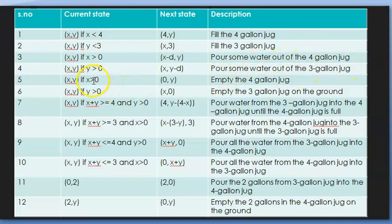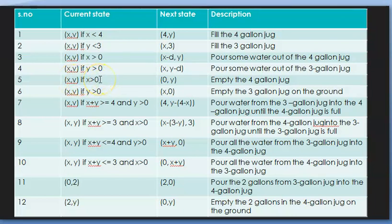If the 4 liter jug has water (i.e., it is not empty), you empty the 4 liter jug. The rule structure consists of a current entering state, a condition which must be satisfied, and an output state which results when you leave the function — this is how the next state is determined.